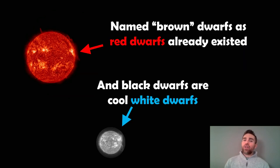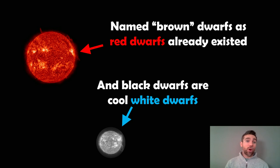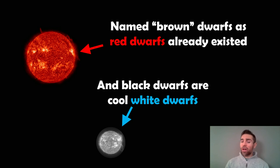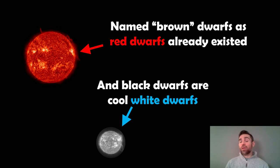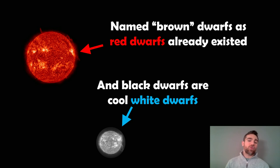Their name doesn't come from the fact that they're actually brown. It's because red dwarfs already existed and already had a name, so we can't call them red dwarfs despite the fact that they might actually be red. And we can't call them black dwarfs because black dwarfs are what a white dwarf will eventually cool down to. So they just went for brown dwarf because it kind of sits in the middle — but it has no real relationship to their colour.